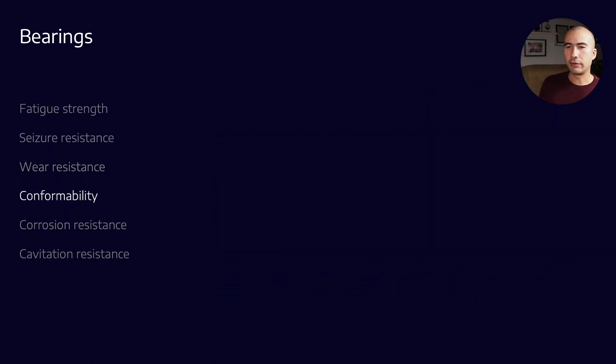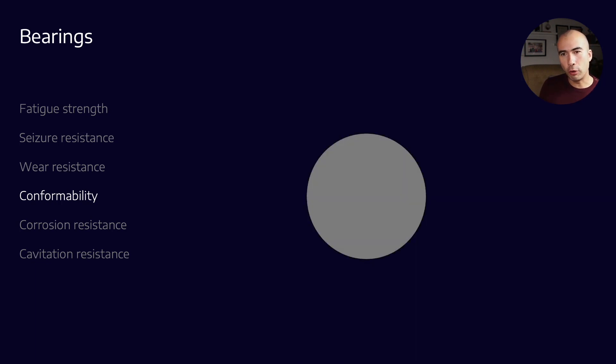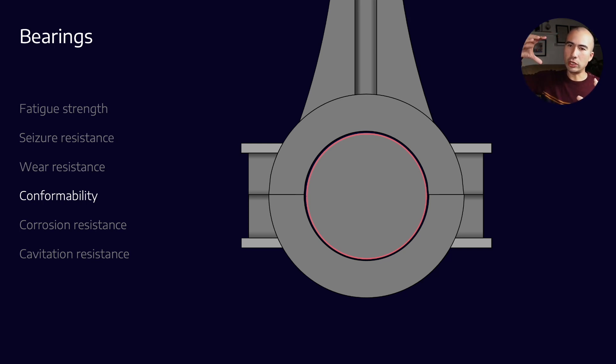Something else that we want out of our engine bearings is that we want something which is conformable. What does that mean? When you put the two halves of the bearing shell together, they don't actually perfectly fit. The way that they're manufactured, they sit a little bit proud—they're going to stick out a little bit from either the connecting rod or the pin. When you put them together and compress everything using the bolts, then it's going to allow that interference fit with the connecting rod and the pin to form.